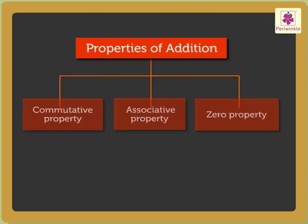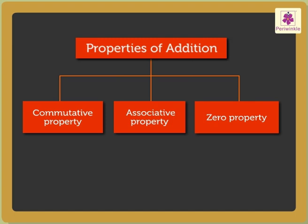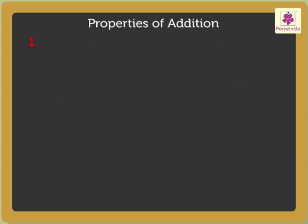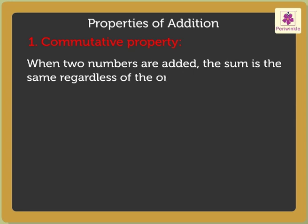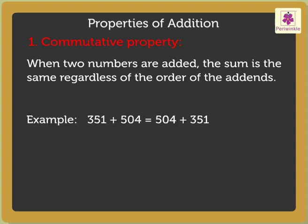Now, let us revise the properties of addition. 1. Commutative Property: When two numbers are added, the sum is the same regardless of the order of the addends. For example,